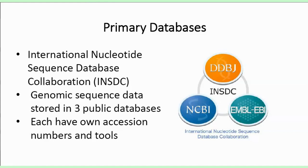The INSDC is a collaboration between three separate institutes, providing a way for genomic sequences to be stored in three public databases that are mirrored to each other on a regular basis. The first is DDBJ in Japan, the second is NCBI in the United States, and the third is EMBL-EBI in the UK. When you submit sequence data, you can submit to any one of the individual databases, and there is regular updating between them, with each having its own accession numbers and tools, although they are all linked to each other.